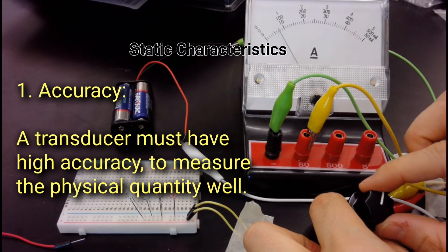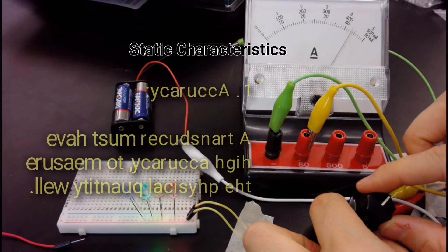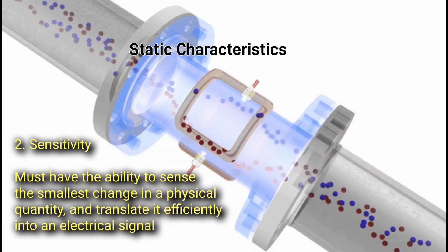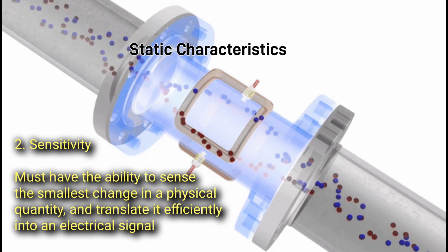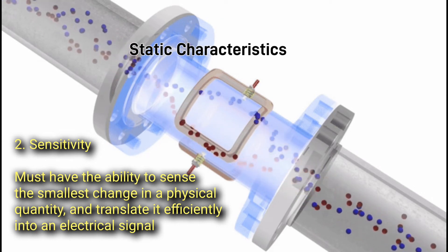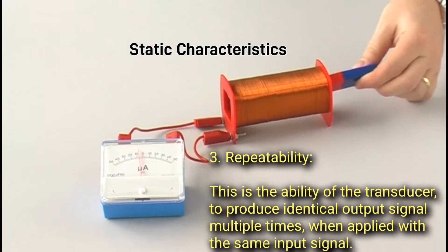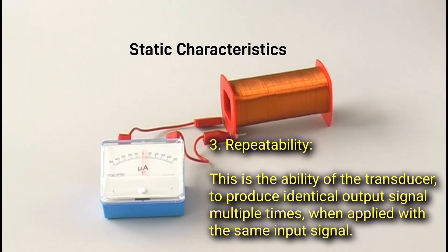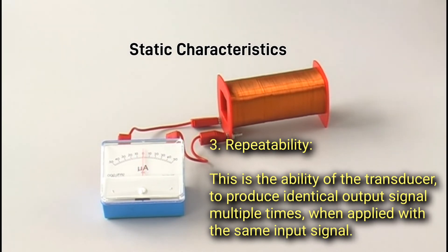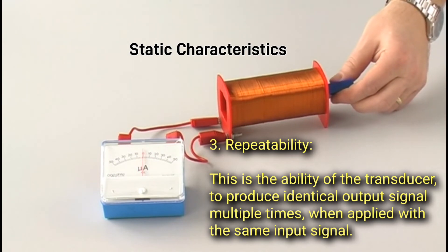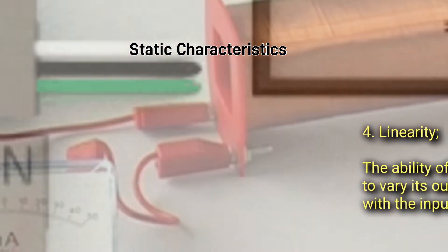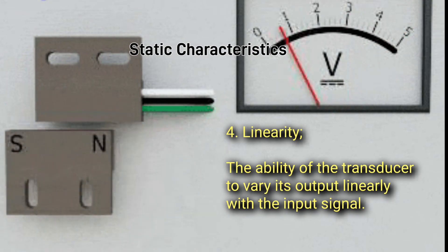Examples of static characteristics include: one, accuracy — a transducer must have high accuracy to measure the physical quantity well; two, sensitivity — it must have the ability to sense the smallest change in a physical quantity and translate it efficiently into an electrical signal; three, repeatability — the ability of the transducer to produce identical output signals multiple times when applied with the same input signal.